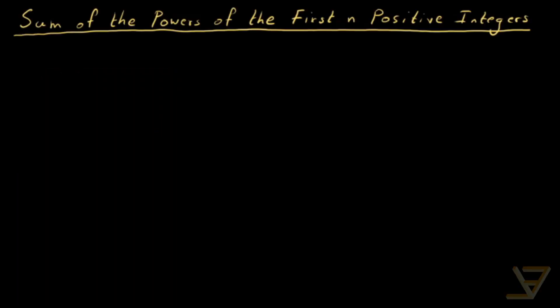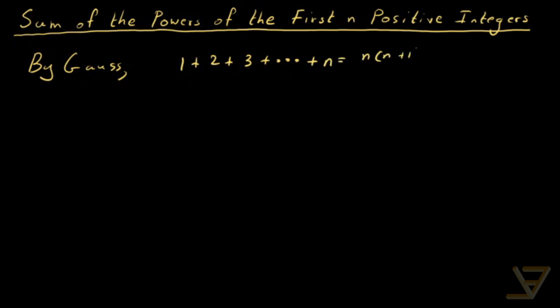Hi everyone. Today we're going to be finding the kth powers of the first n positive integers. We already have seen the most basic version of this: by Gauss's trick, 1 plus 2 plus 3 all the way through plus n is equal to n times (n plus 1) over 2.